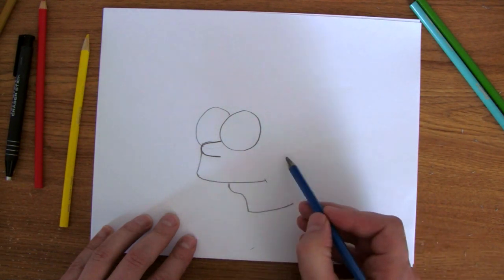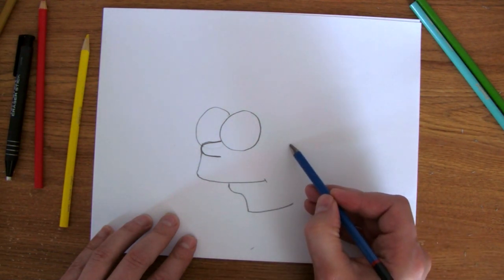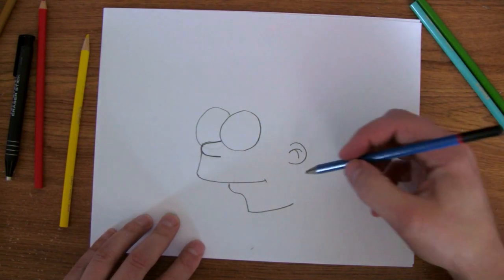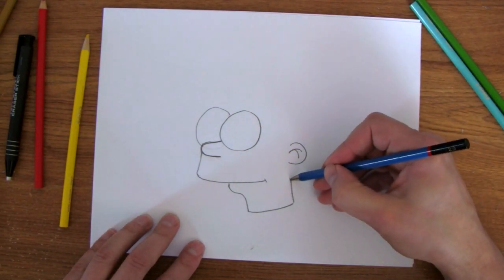So, his ear lines up almost with his nose. Goes here. And the way they draw the Simpson ears is they just do this. Now, the back of his neck will come up to meet his ear.